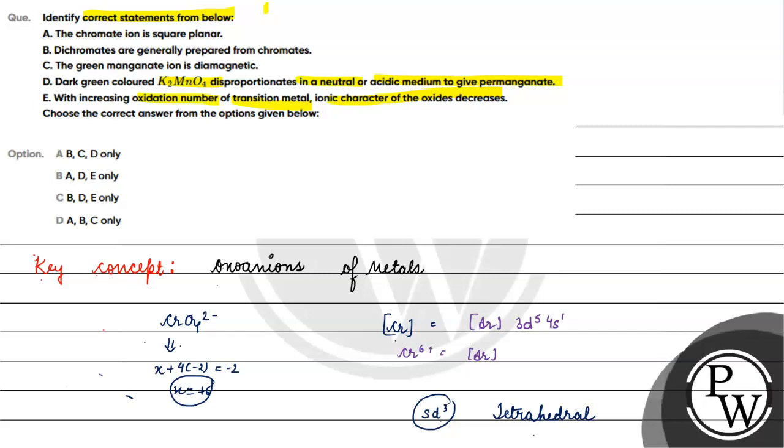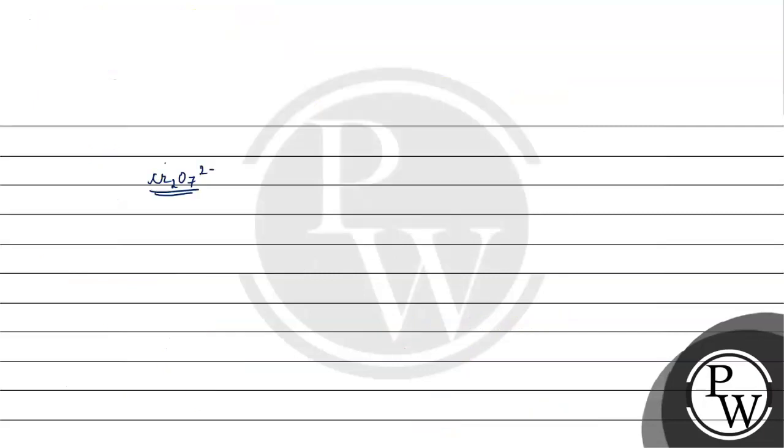Then, the green manganate dianion is diamagnetic. Manganate is MnO4 2-. Mn's oxidation state: x plus 4 times minus 2 equals minus 2, so x is plus 6. Manganese's general electronic configuration is argon 3d5 4s2. In the Mn+6 oxidation state, it's argon 3d1. There is one unpaired electron present.